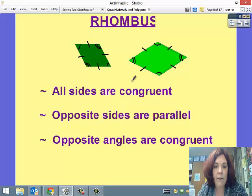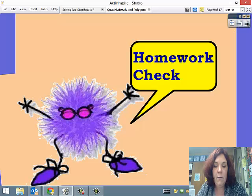That means all sides are equal. Some people would consider this a slanted square because the sides are equal, the opposite sides are parallel, and the opposite angles are congruent. The only thing that makes this not a square is that it doesn't have right angles.